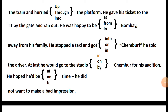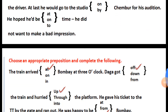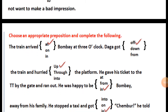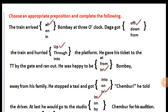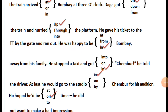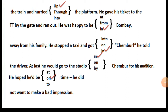There are five blanks, each with three preposition choices. The train arrived at Bombay at three o'clock. Daga got off the train and hurried up the platform. He gave his ticket to the TT by the gate and ran out. He was happy to be in Bombay, away from his family. He stopped a taxi and got in — Chambur, he told the driver. At last he would go to the studio in Chambur for his audition. He hoped to be on time. He did not want to make a bad impression.